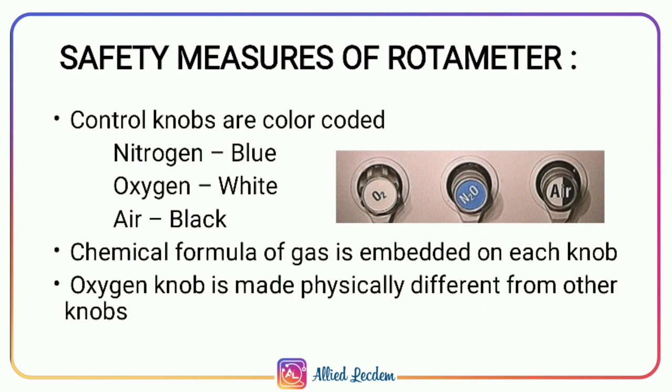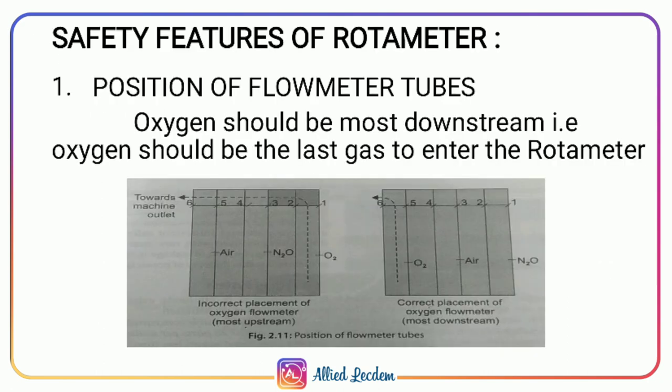Safety measures of the rotameter: the control knobs are color coded — nitrous oxide is blue, oxygen is white, and air is black. The chemical formula of gases is embedded on specific knobs. The oxygen knob is physically different from other knobs so that it can be easily differentiated even by touch. Additionally, the position of flowmeter tubes is important — oxygen should be the most downstream, i.e., the last gas to enter the rotameter, so oxygen is the first gas near the machine outlet.